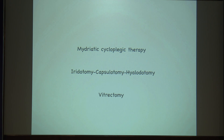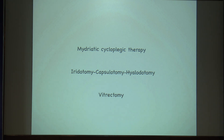For aqueous misdirection, the first treatment is to put a mydriatic cycloplegic when you see a shallow AC. The patient will already be on a cycloplegic post-trabeculectomy, so you have to increase the dose. The next method is to do an iridotomy, capsulotomy, and hyaloidotomy. Through the PI, you can use an Nd:YAG laser to do iridotomy, capsulotomy, and hyaloidotomy — or surgically. If nothing works, you will have to go ahead and do vitrectomy, because the aqueous is draining into the vitreous, creating a vitreous pocket, so you make the anterior hyaloid so aqueous can escape into the anterior part.